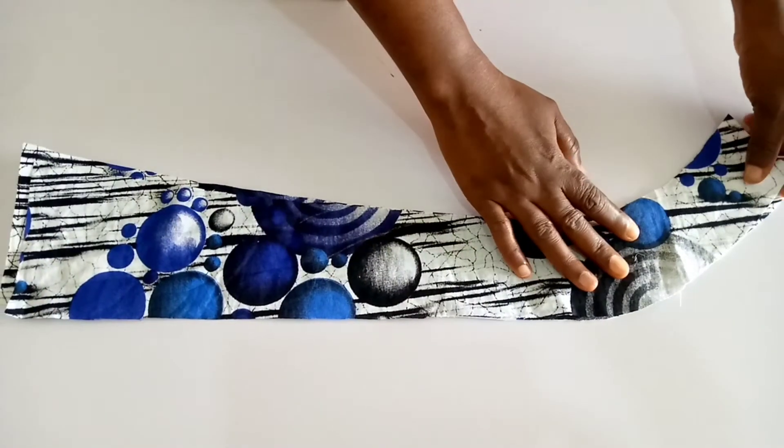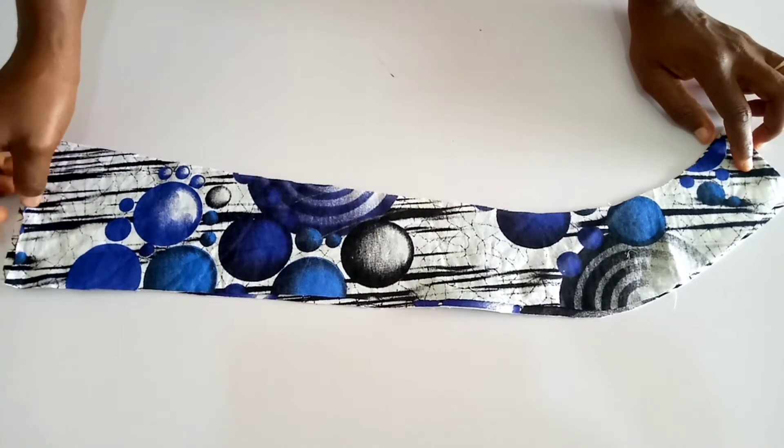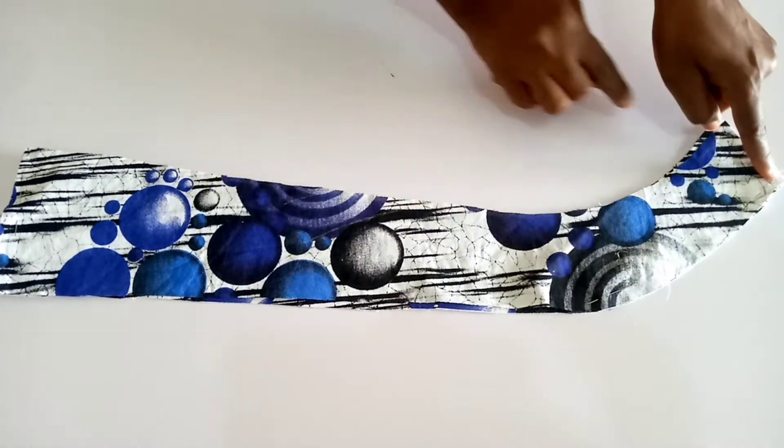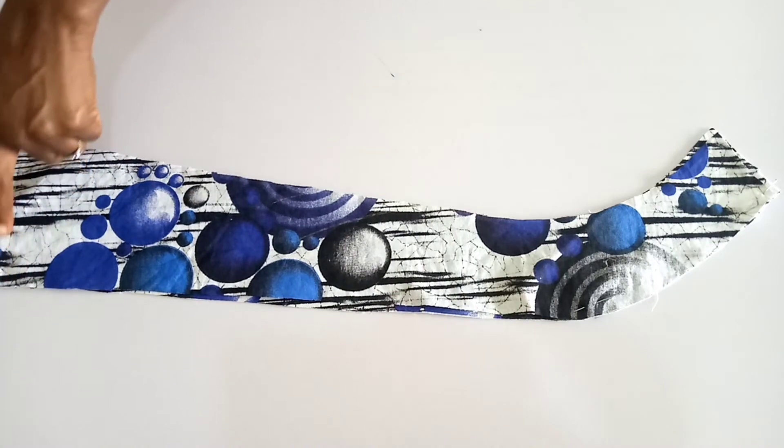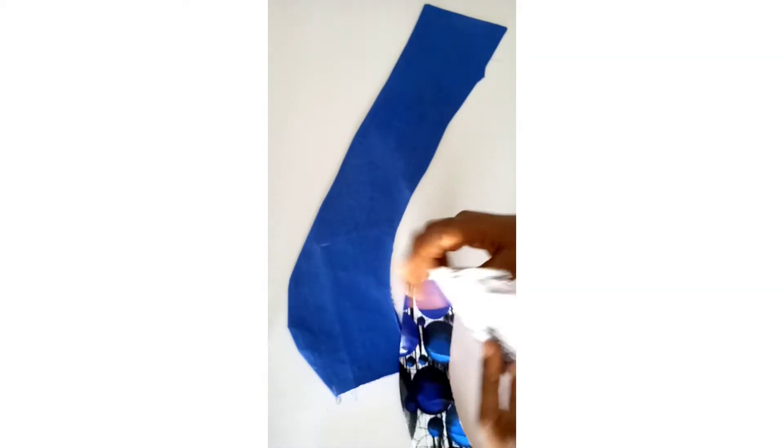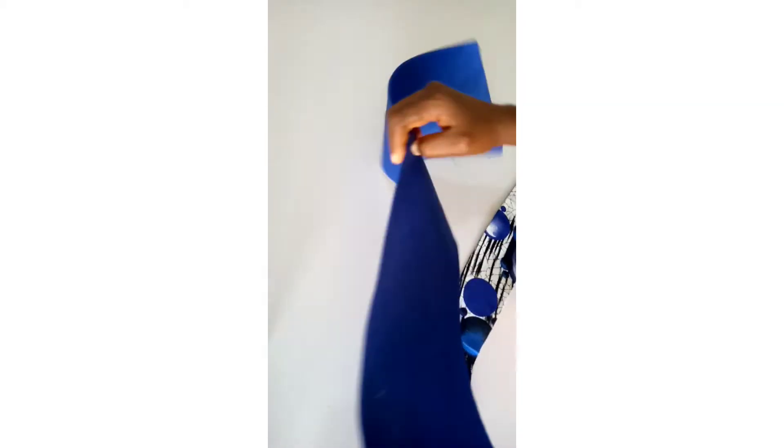Then we will sew the small one. Place the lining on it, pin, and sew like so. So we sewn it. And this is what it looks like. You can see we sewn the big one and the 6 inch overlap. You can see.